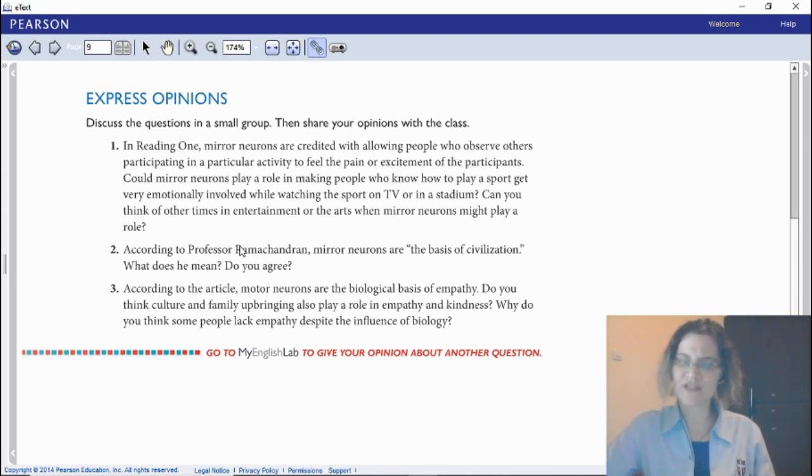That brings us to the last point: expressing opinions. There are three questions, and I want you to choose only one—either one, two, or three. I want you to write your opinion about it and give reasons for it. Number one: In Reading 1, mirror neurons are credited with allowing people who observe others participating in a particular activity to feel the pain or excitement of the participants. Could mirror neurons play a role in making people who know how to play a sport get very emotionally involved while watching the sport on TV or in the stadium? Can you think of other times in entertainment or the arts when mirror neurons might play a role?